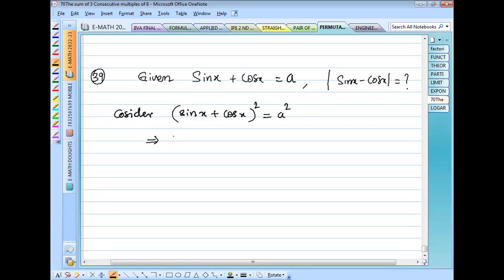Now this implies sin²x + cos²x + 2sinxcosx according to (a + b)² formula, which is equal to a².